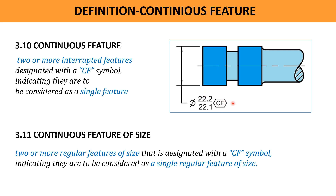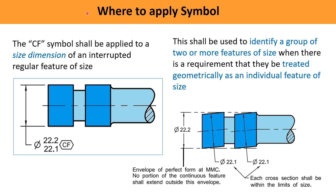Now let us see where this symbol shall be applied on a drawing. The CF symbol shall be applied to a size dimension of an interrupted regular feature of size. If you consider these two features and want them to be considered as a single feature — note it is not a single continuous feature but is interrupted, with a gap between the two features — the CF symbol is immediately applied after the size dimension, as shown here.